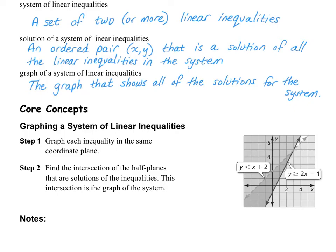In the example below, we can see the steps for graphing a system of linear inequalities. Step 1 is to graph each inequality in the same coordinate plane. They graphed y is less than x plus 2 using a dashed line, and it's everything below that dashed line. And then they graphed y is greater than or equal to 2x minus 1 with a solid line and everything above that solid line.